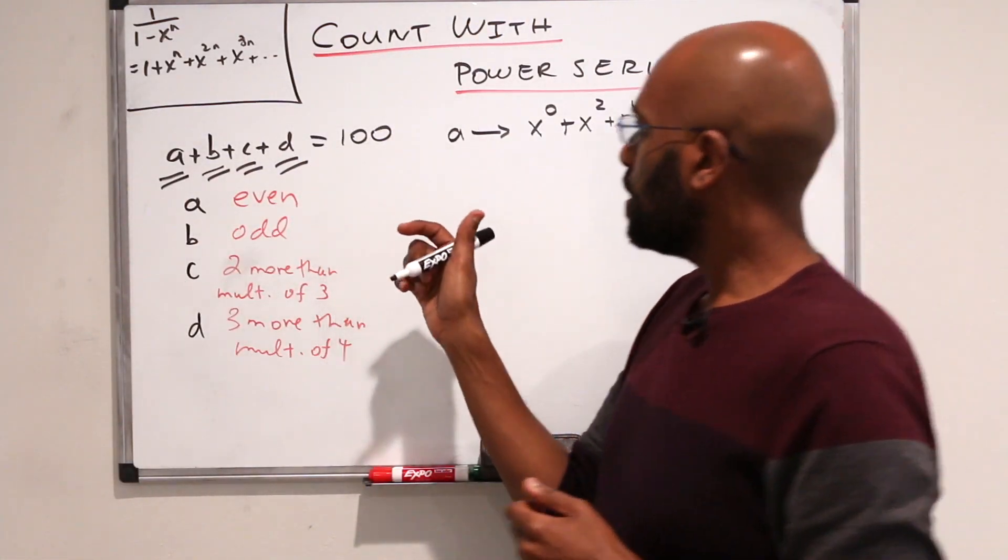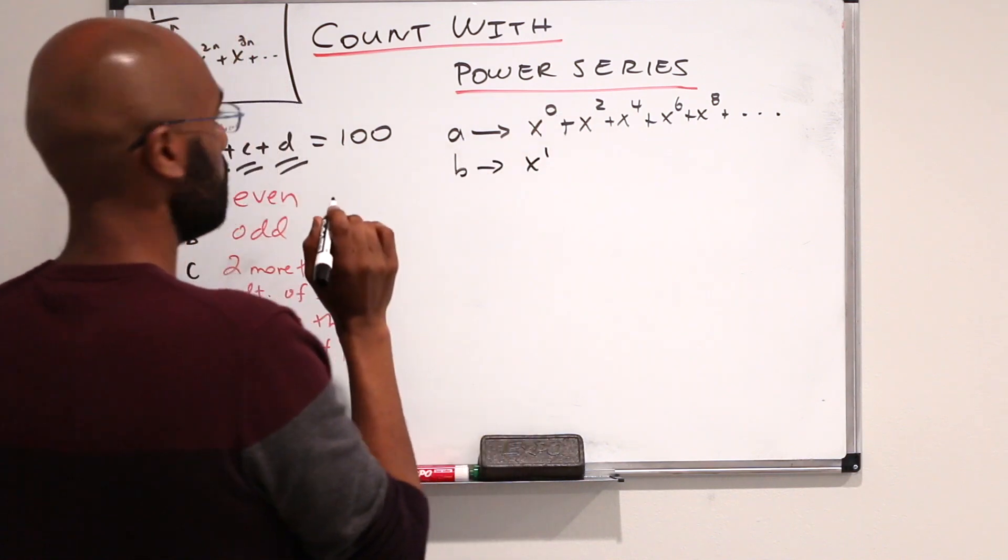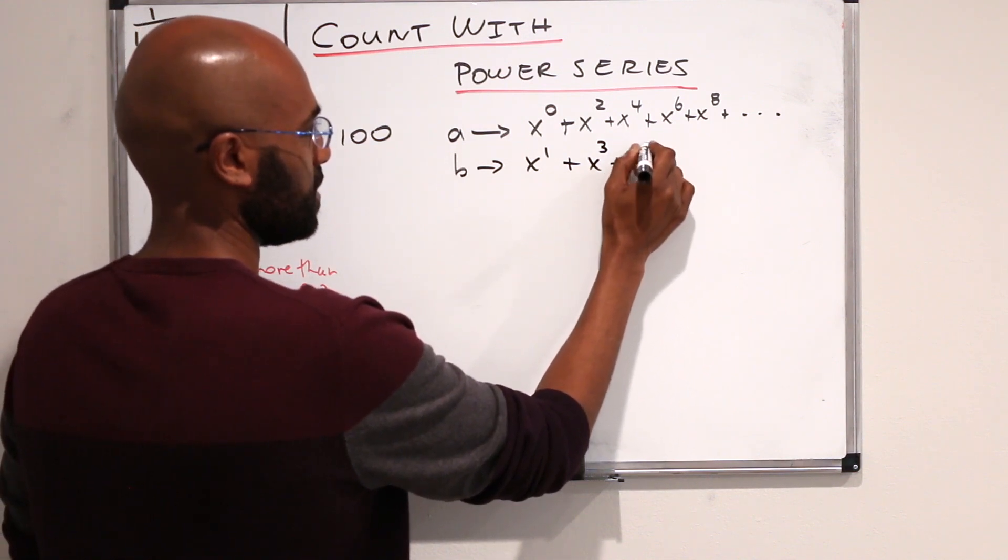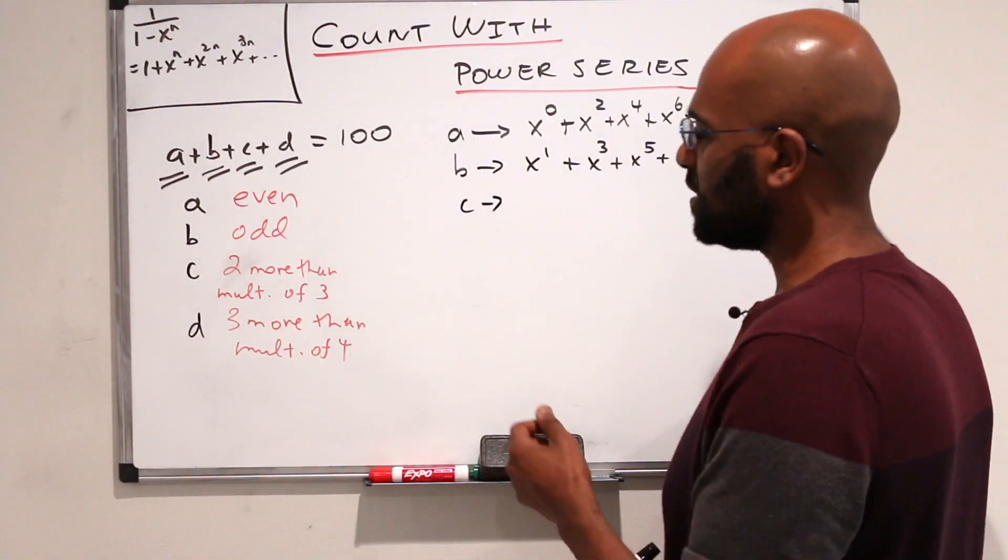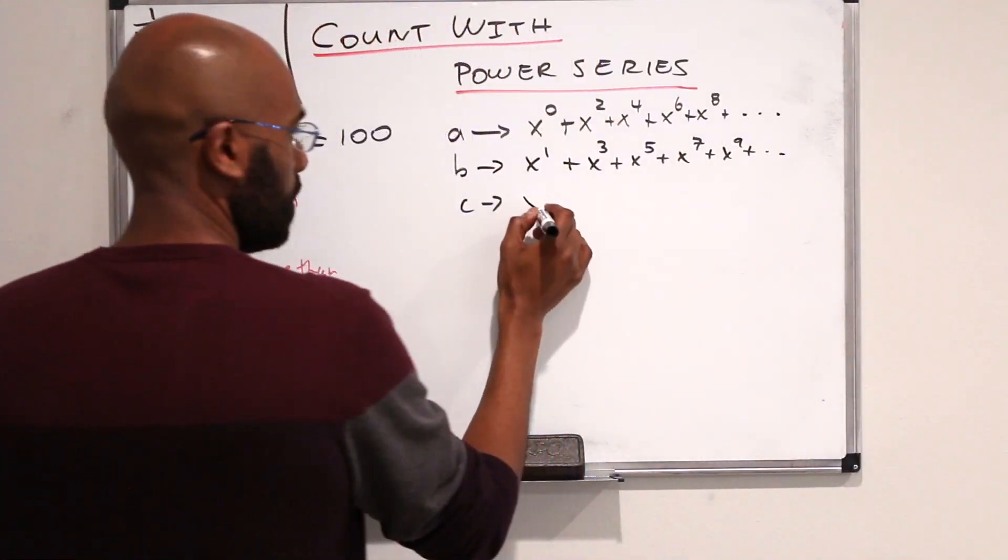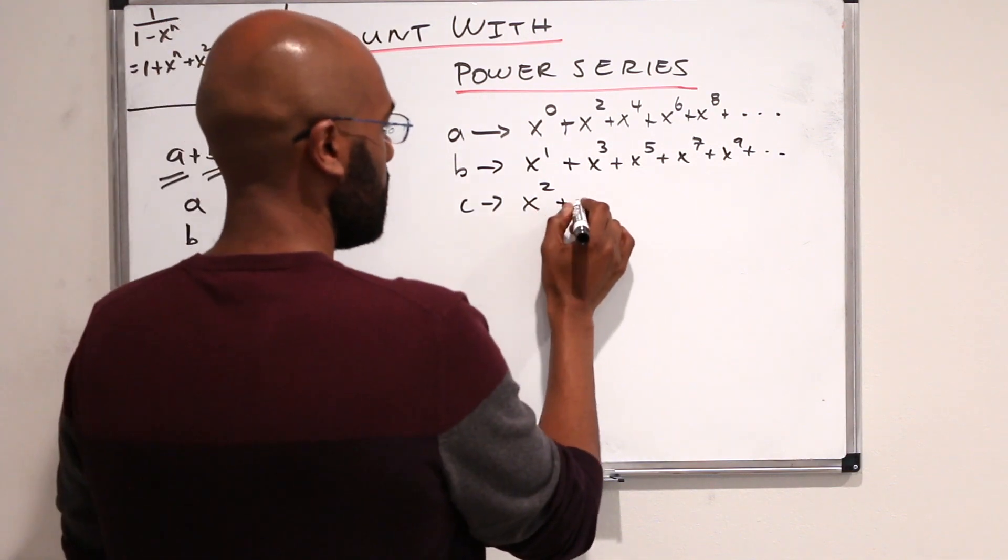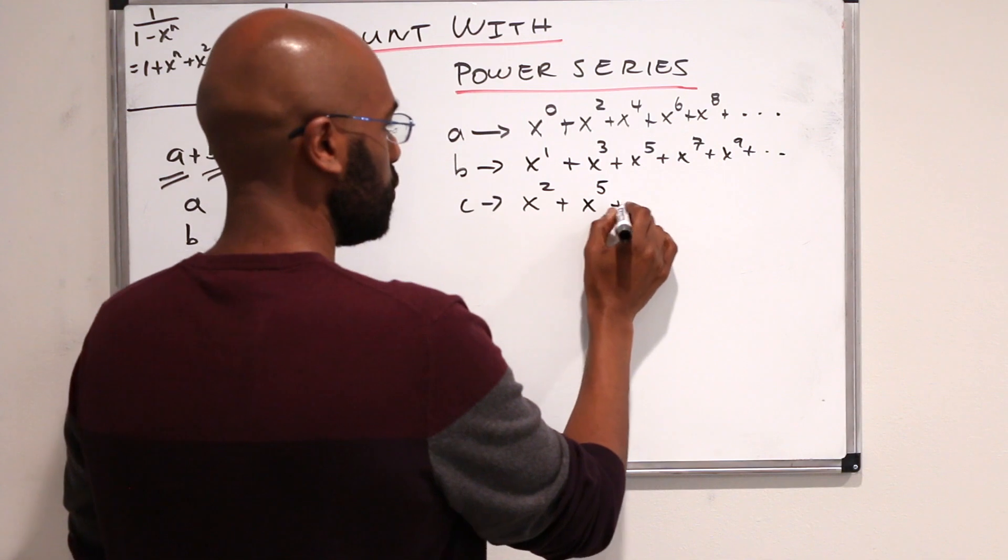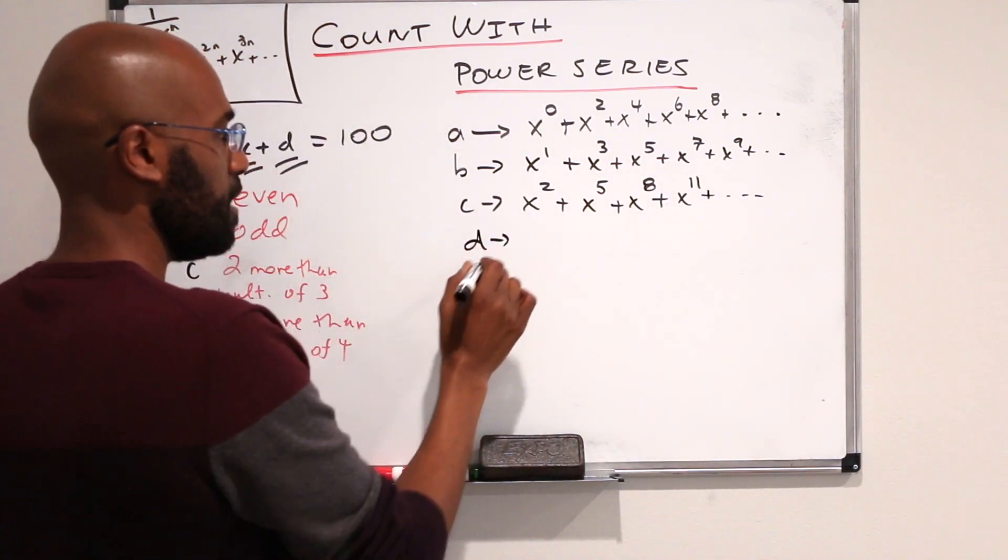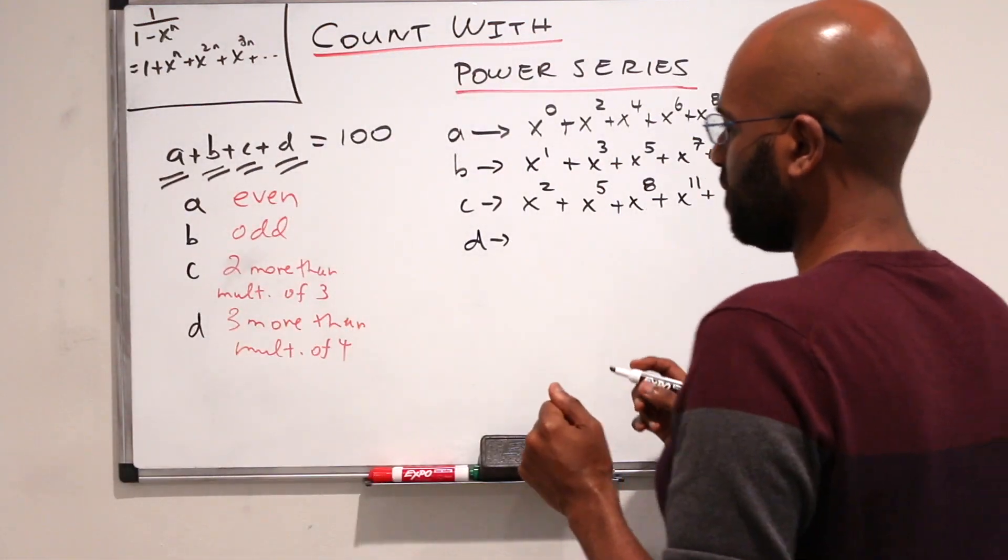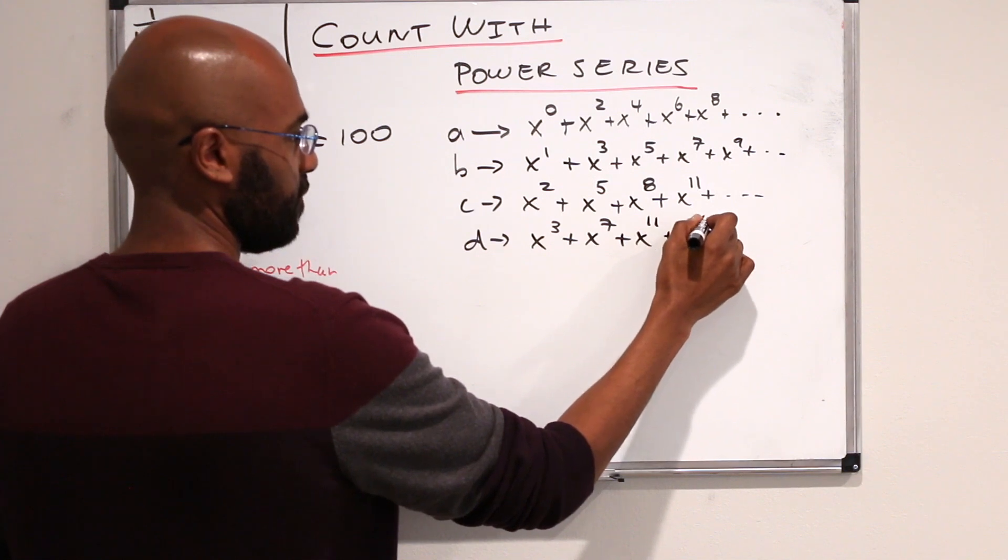B has to be an odd number, so we'll make a power series that has only odd number exponents in it: x to the 1, x to the 3, x to the 5, x to the 7, x to the 9, etc. For C, which is 2 more than a multiple of 3, we have x squared, then 2 plus 1 times 3, then 2 plus 2 times 3, then 2 plus 3 times 3, etc. And for D, which is 3 more than a multiple of 4, we have numbers like x cubed, x to the 7th, x to the 11th, x to the 15th, etc.